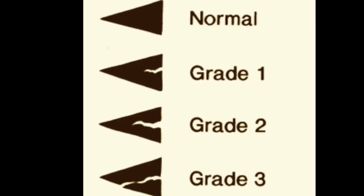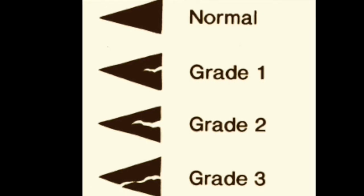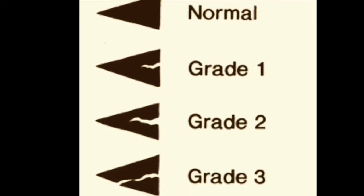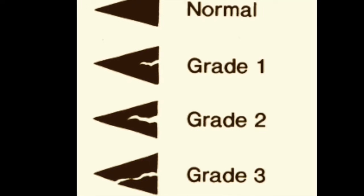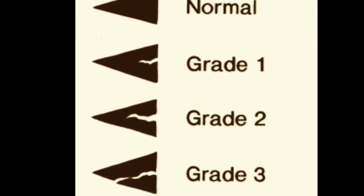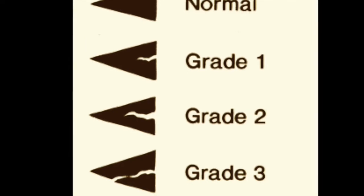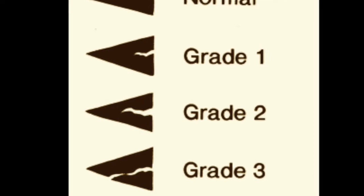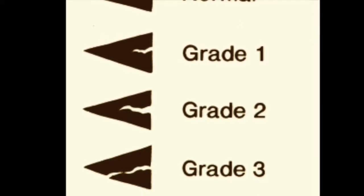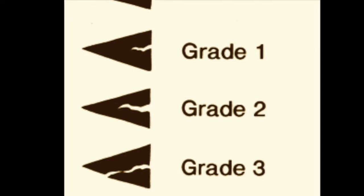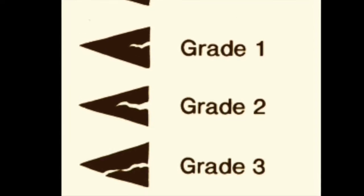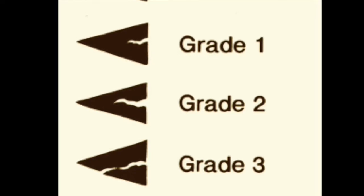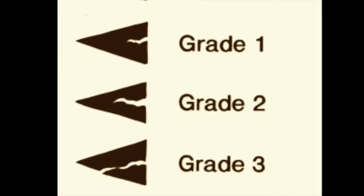Coming to abnormal signal intensity changes in a meniscus — they are broadly graded as grade 1, 2, and 3. Grade 1 and 2 are not called tear; they are termed grade 1 and grade 2 signal intensity changes because they do not reach the articular surface. Grade 1 represents globular signal intensity change, grade 2 represents linear signal intensity change not reaching the articular surface. It is the grade 3 signal intensity change which is called a meniscal tear.